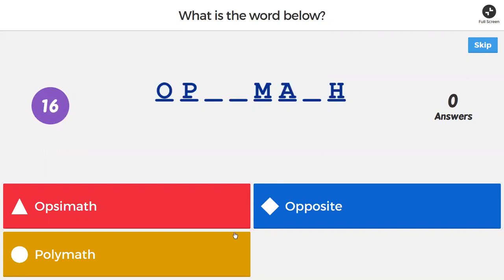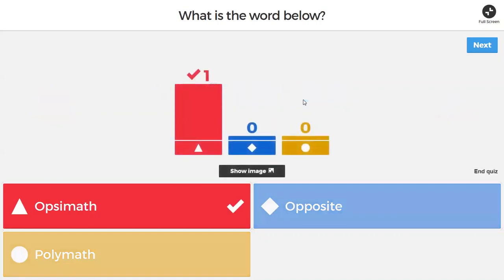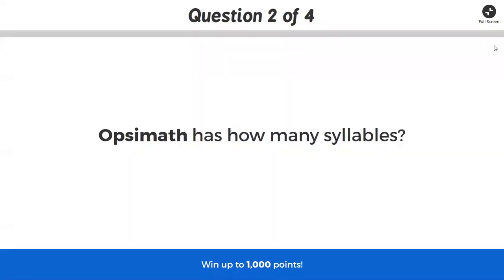At some point the answer should be obvious to the student or guessable to the student. So it's sort of a fun way to have them begin playing with the word, whether they're familiar with it or not. So even if they had never heard of the word opsimath, they can answer this question and it's a fun way to play through it.